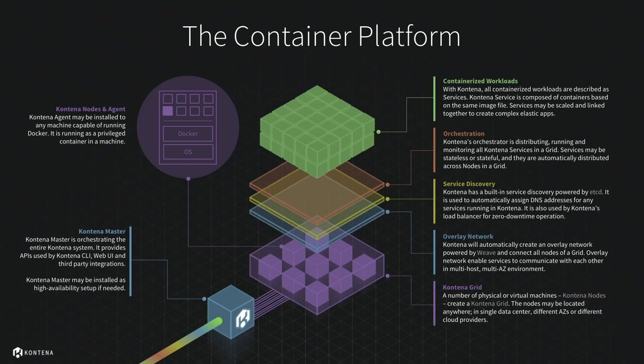On top of the overlay network, we have built-in service discovery based mostly on DNS, and it can also utilize an etcd key-value store if needed for use cases that DNS might not cover. Contena then orchestrates all your services and containers across the different nodes in the grid. Services can be stateful or stateless, and they are automatically distributed and balanced across the different nodes.